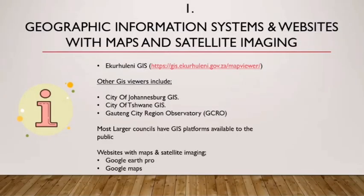The first tool we use to obtain property data and determine property potential is geographic information systems and websites with maps and satellite imaging. For this presentation, we make use of the Ekurhuleni GIS site available at gis.ikaruleni.gov.za/map-viewer. Other GIS viewers include the City of Johannesburg GIS, the City of Tshwane GIS, and the Gauteng City Region Observatory (GCRO). Most larger councils have a GIS platform available to the public free of charge. We will also be looking at Google Earth Pro.